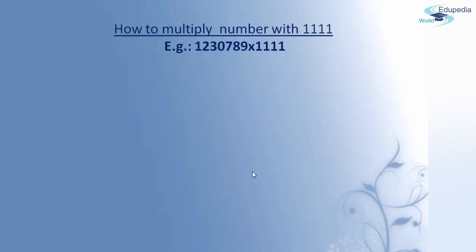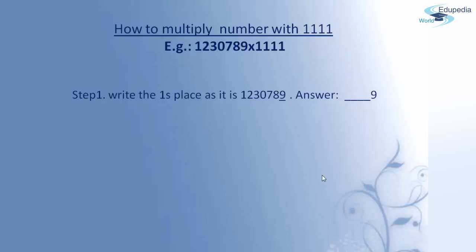At first, what I am going to do is take the ones place digit and write it in the answer as it is. Here in the multiplicand, in the ones place, I am having the digit 9, and this 9 should be written in the answer as it is.